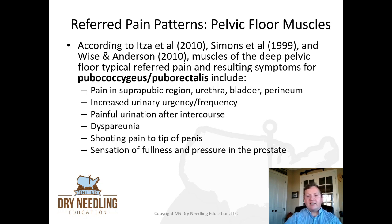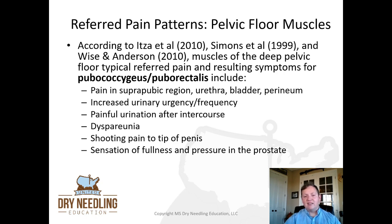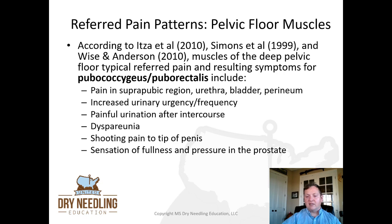For pubococcygeus and puborectalis, some of those pain referrals include pain in the suprapubic region, the urethra, the bladder, the perineum, increased urinary urgency or frequency, painful urination specifically after intercourse, painful intercourse, shooting pain to the tip of the penis in individuals with male anatomy, and a sensation of fullness and pressure in the prostate. It's fascinating to think that a muscle can give you a referral pattern that includes an increase in urinary urgency or frequency.